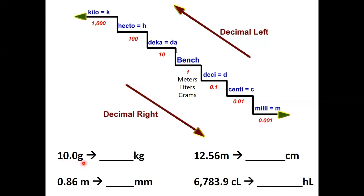Over here, we have 10 grams, and we need to get to kilograms. We're going to start here in the middle at the one. We're going to go one, two, three places to the left. So when we do that, we end up with 0.01 kilograms.